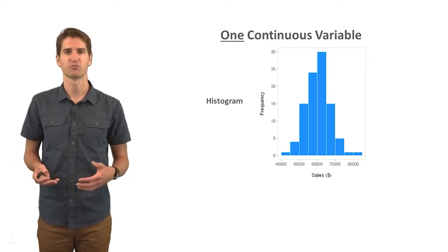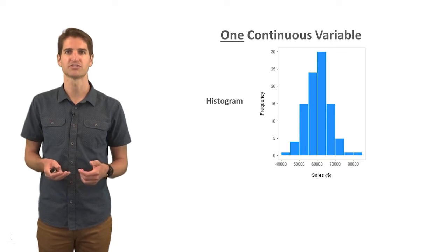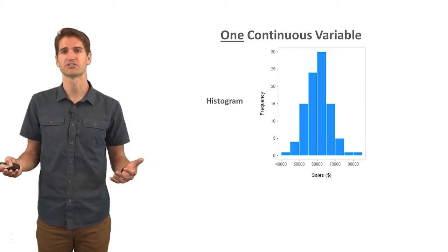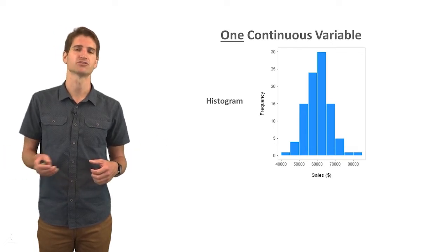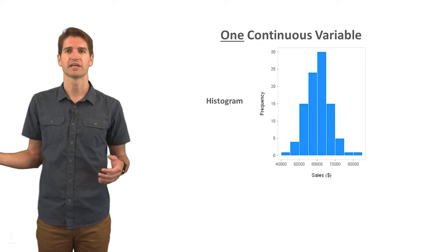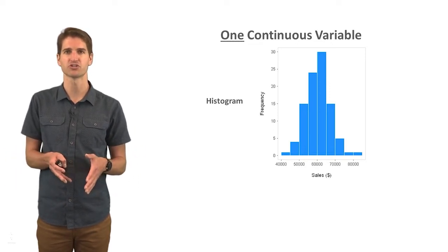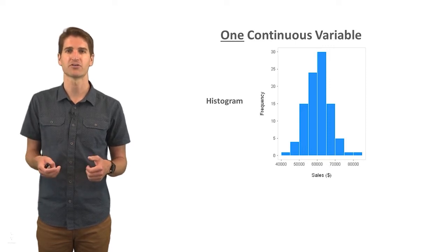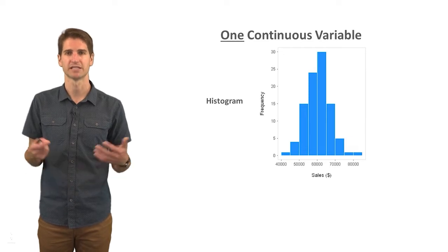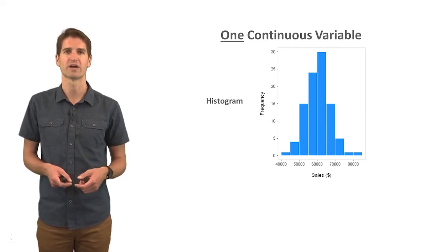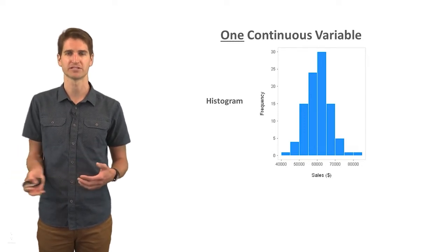If we have one continuous variable and we want to understand the distribution, the histogram is a great starting place. Here we see sales data in dollars that people have generated over a quarter — the most people are in the middle of the distribution in terms of sales they generate, and the fewest people are in the tails. This looks more or less like a normal distribution, so a histogram is a useful way for understanding and explaining the distribution of a relatively continuous variable.